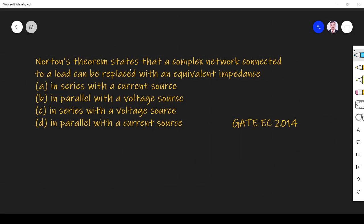The question is: Norton's theorem states that a complex network connected to a load can be replaced with an equivalent impedance (a) in series with the current source, (b) in parallel with the voltage source, (c) in series with the voltage source,